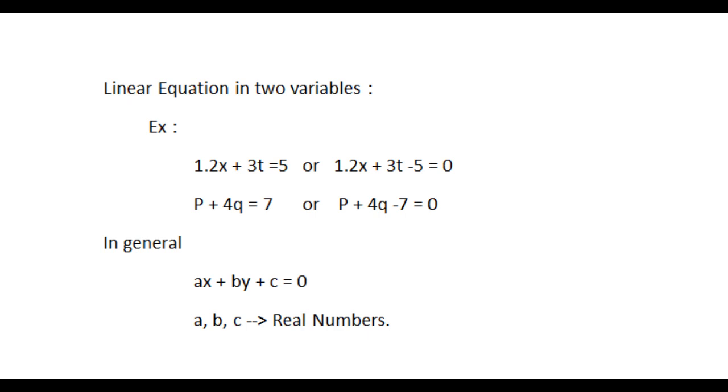So, any equation which can be put in the form ax plus by plus c equal to 0, where a, b, c are real numbers and a and b both not 0, is called a linear equation in two variables.